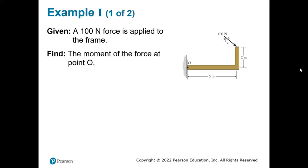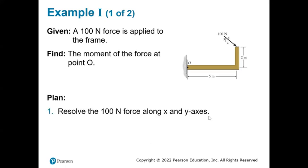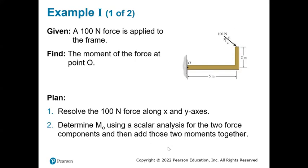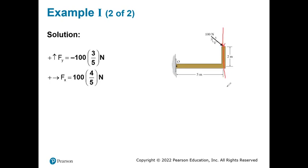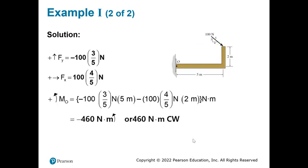For the scalar approach example with a 100 Newton force at an angle: since finding the perpendicular distance directly is difficult, we resolve the force into X and Y components. The X component is minus 100 times 3/5 and the Y component is 100 times 4/5. The perpendicular distance for the vertical component is 5, and for the horizontal component is 2. Computing and summing both moments gives 460 Newton meters in the clockwise direction.